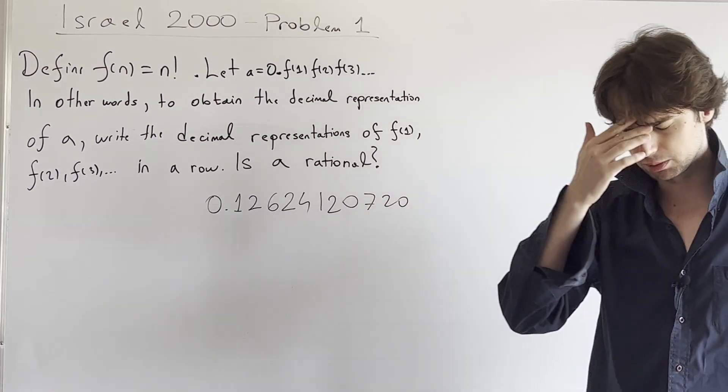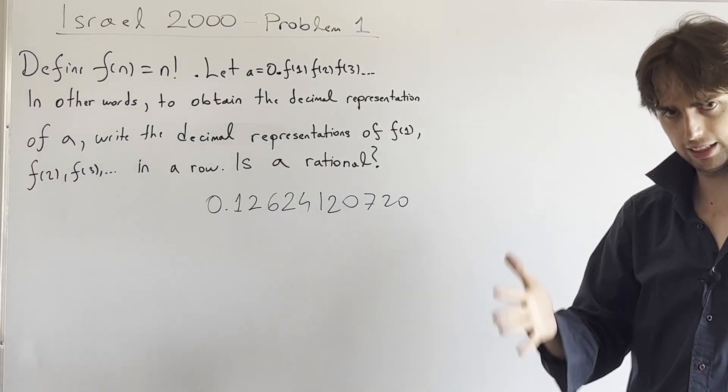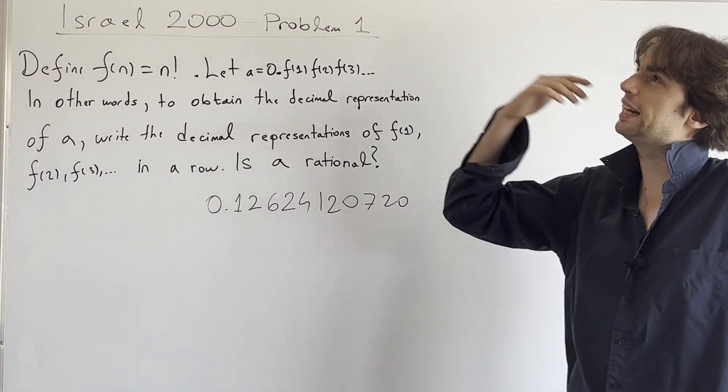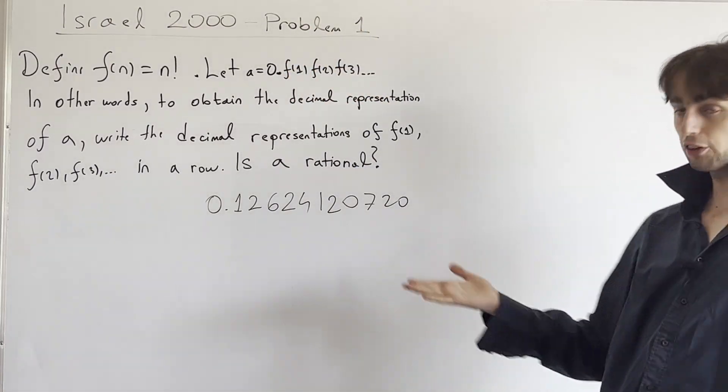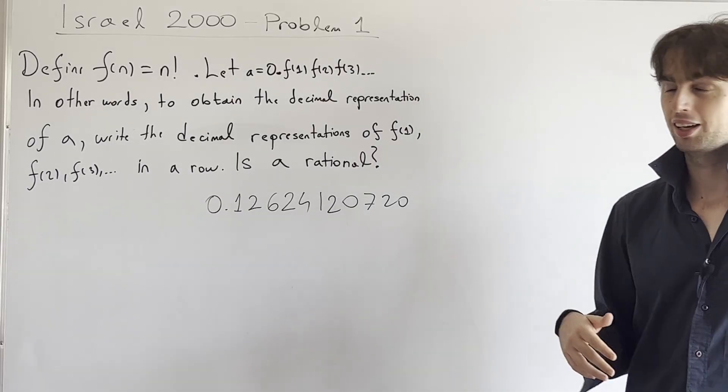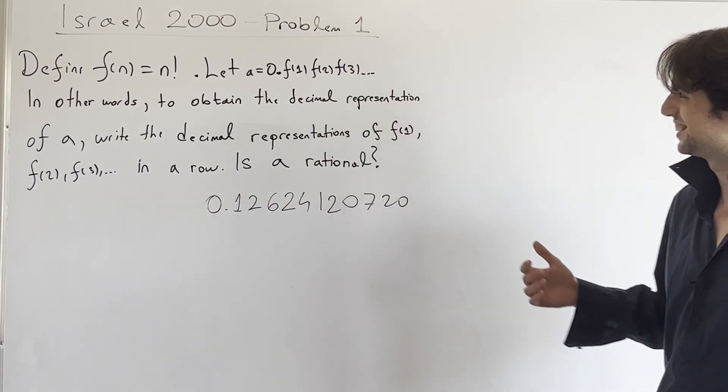And if they're periodic starting from some place, then okay, can we prove that? And even you should also ask yourself, what is an easier route to go down when you're trying to prove things? Is it easier for A to be rational or irrational? If it's rational, we need to figure out an M and N such that M over N is A.